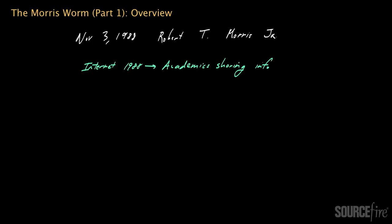The program that Robert Morris Jr. wrote has come to be referred to as the Morris worm. I thought I would do a series of videos describing the Morris worm, with this first video being more of an overview. The Morris worm is very much a historical relic at this point — the original worm would not propagate or do as much damage today because the technical flaws it took advantage of are no longer found on modern systems.